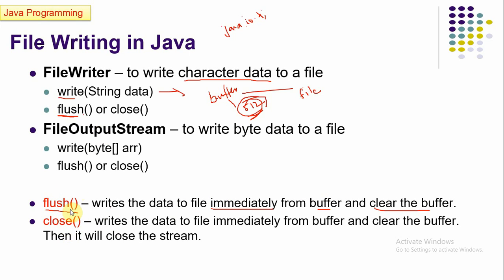There is also a close() method which does the same flushing process but additionally closes the stream. Once you close the stream, you cannot write more data — attempting to do so will throw an exception. With flush(), however, you can call it multiple times and still continue writing data afterwards.